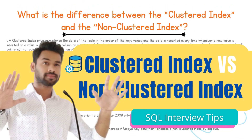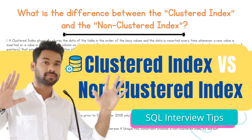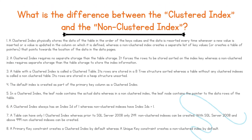The next question is: what is the difference between clustered index and non-clustered index? A clustered index physically stores the data of the table in the order of the key's values, and the data is resorted every time whenever a new value is inserted or a value is updated in the column on which it is defined. Whereas a non-clustered index creates a separate list of key values, or a table of pointers that points towards the location of the data in the data pages.